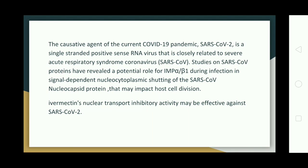This broad-spectrum activity is believed to be due to the reliance by many different RNA viruses on IMP alpha/beta 1 during infection. The causative agent of the current COVID-19 pandemic, SARS coronavirus 2, is a single-stranded positive-sense RNA virus closely related to severe acute respiratory syndrome coronavirus. Studies on SARS coronavirus proteins have revealed a potential role for IMP alpha/beta 1 during infection in nucleocytoplasmic shuttling of the SARS coronavirus nucleocapsid protein, which may impact host cell division.